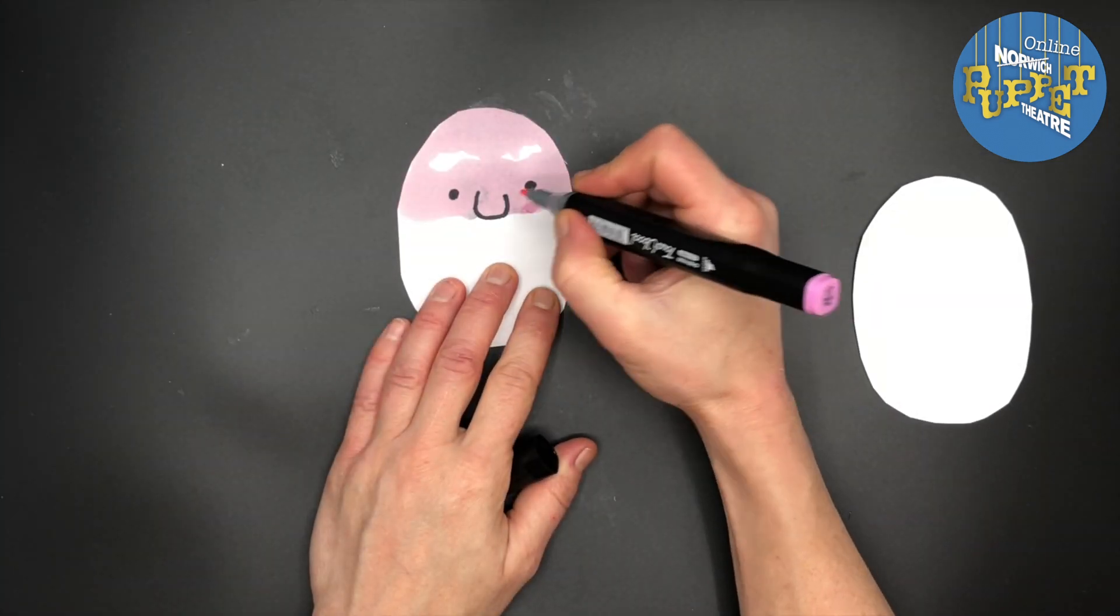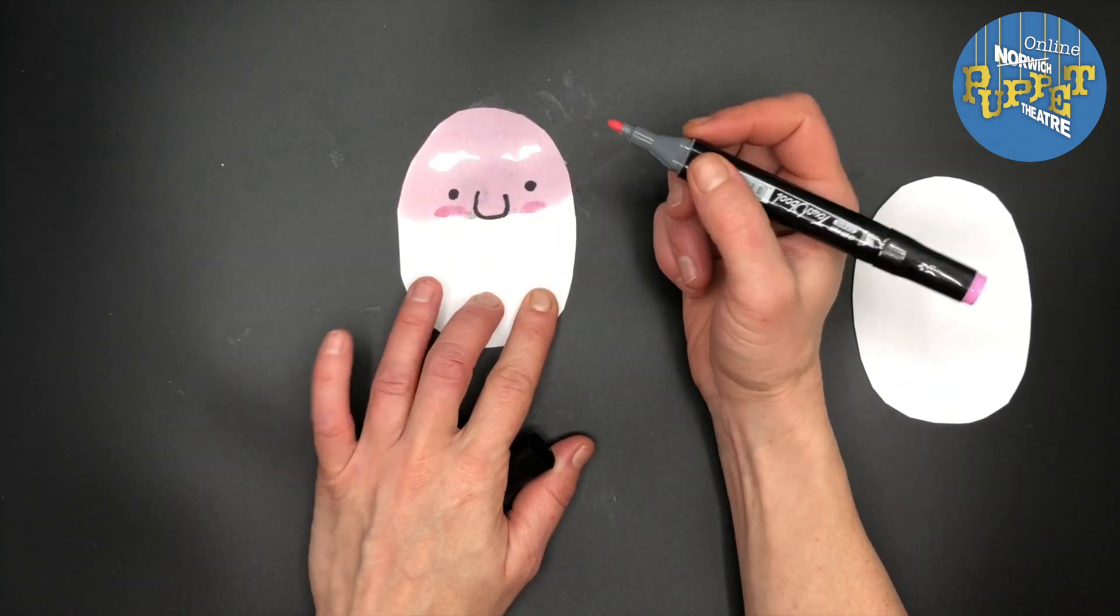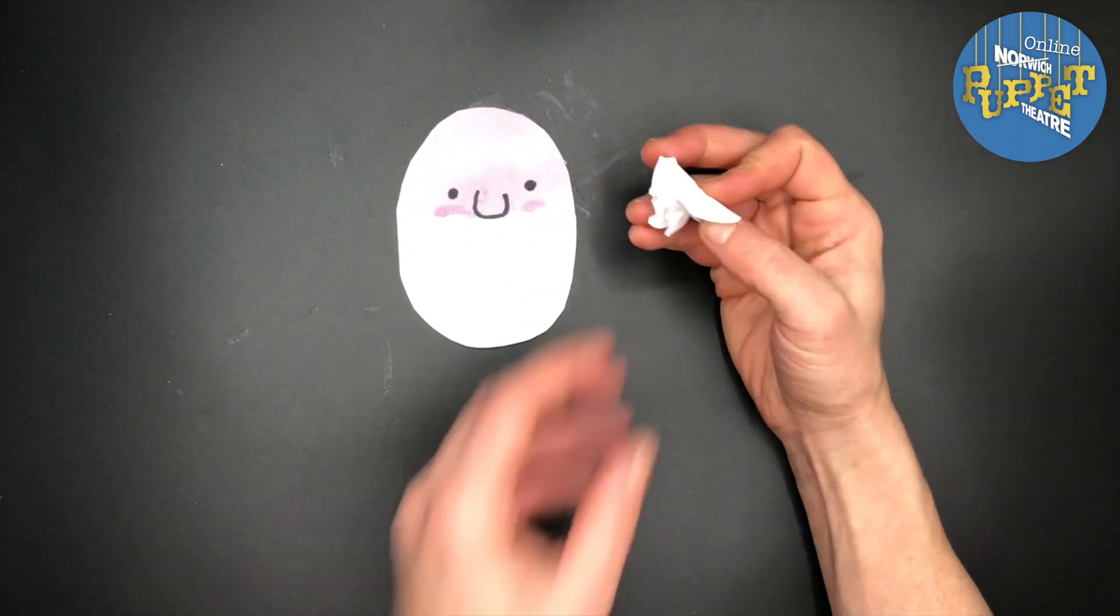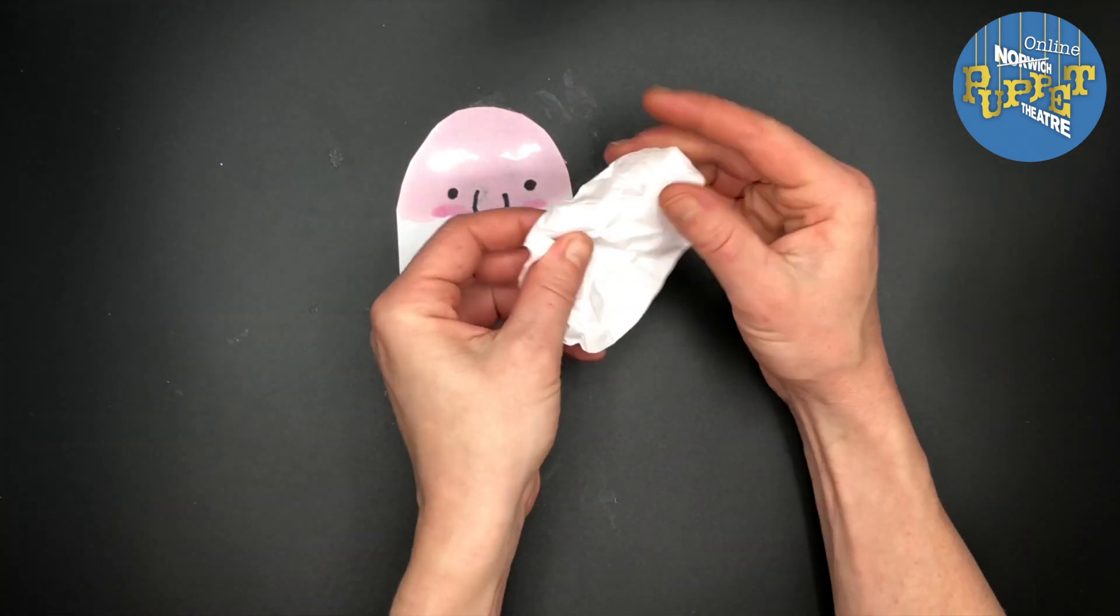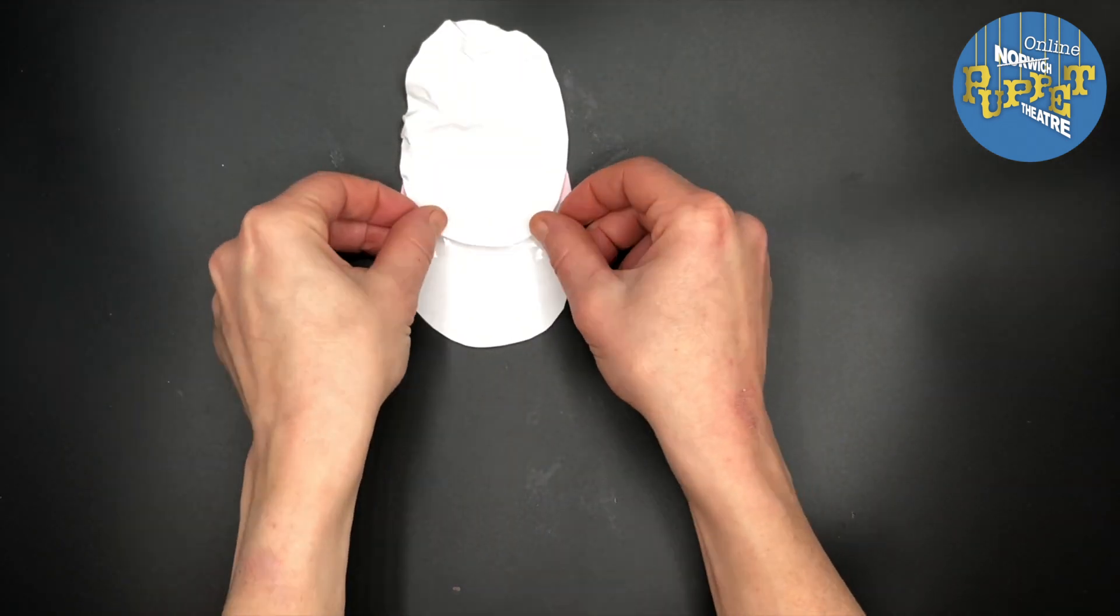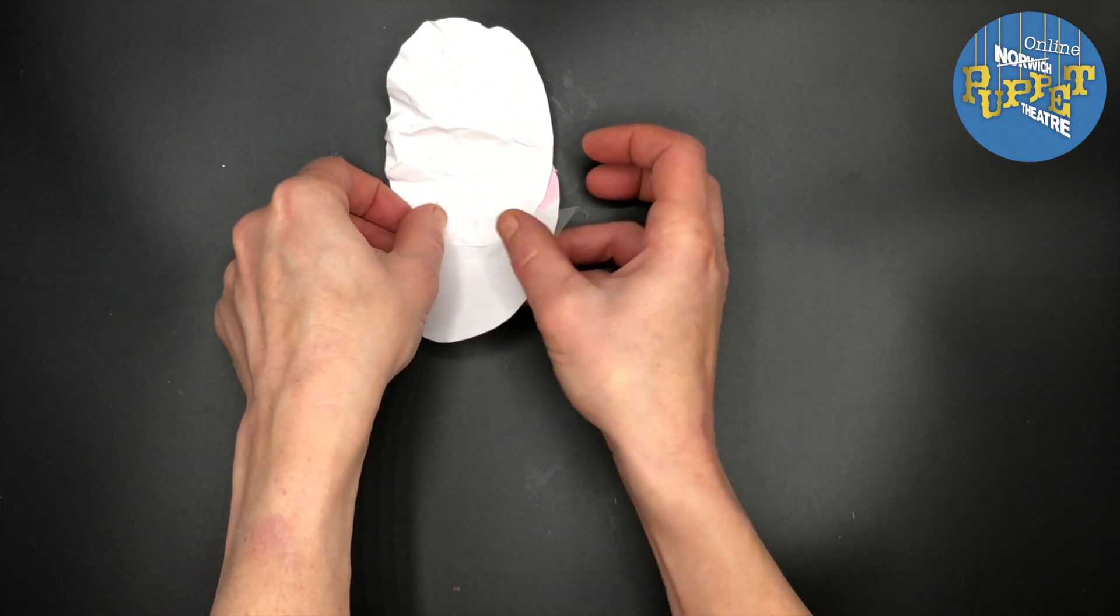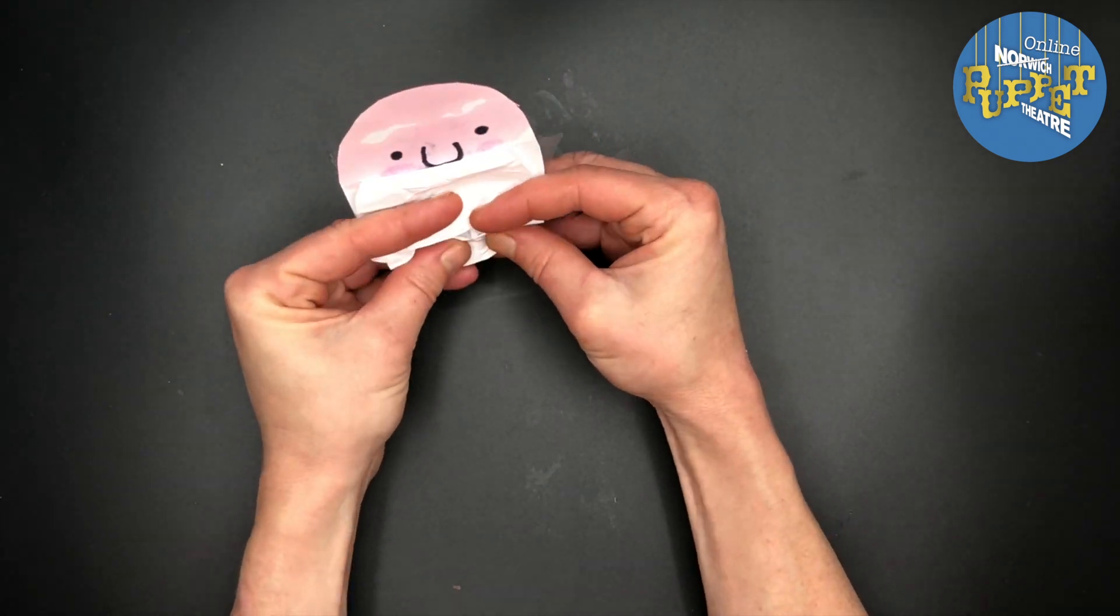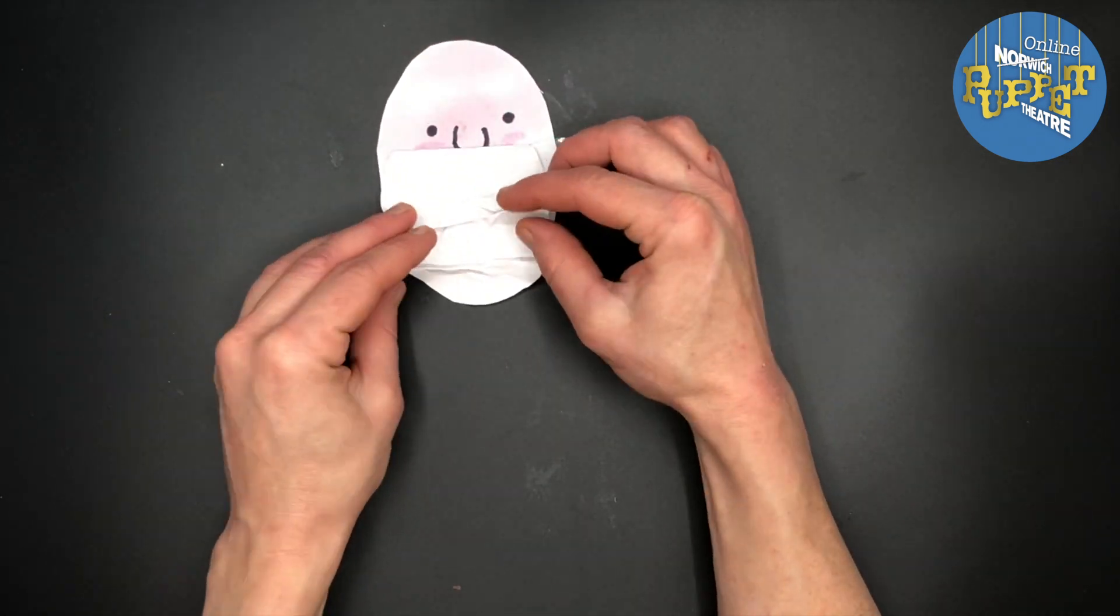The other oval is going to be Father Christmas's beard. Scrunch this up, then unscrunch it and lay it over Father Christmas's face. Tape the bottom of the oval and fold it back down so Father Christmas can see where he's going. Arrange Father Christmas's beard by pinching the paper so that it fits nicely on the oval below.